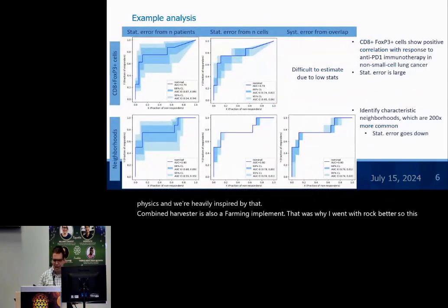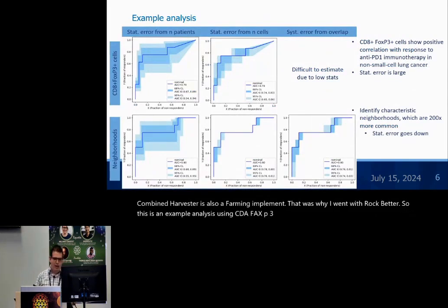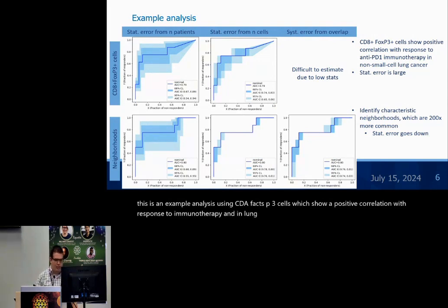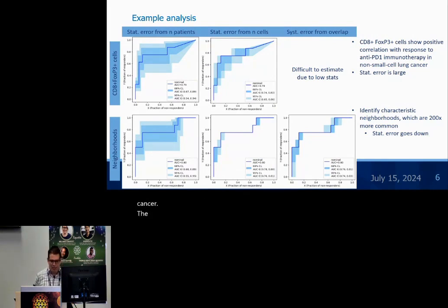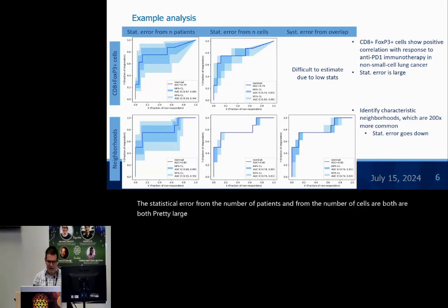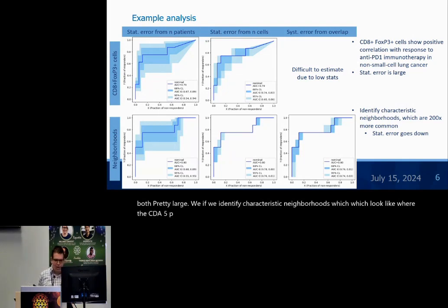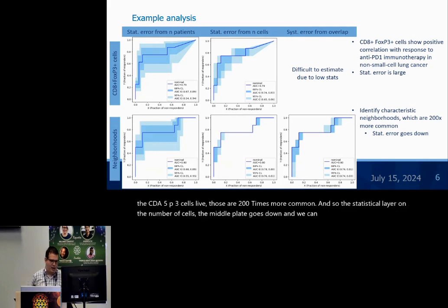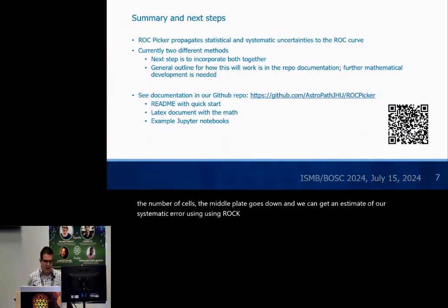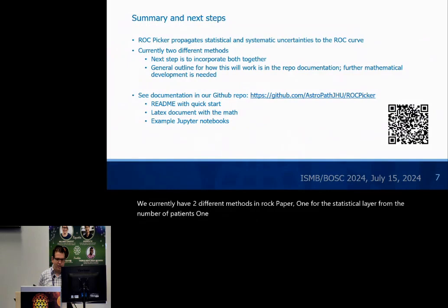Here is an example analysis using CD8-FATP3 cells, which show a positive correlation with response to immunotherapy in lung cancer, also in melanoma, but this one is lung cancer. The statistical error from the number of patients and from the number of cells are both pretty large. If we identify characteristic neighborhoods — which look like where the CD8-FATP3 cells live — those are 200 times more common, so the statistical error on the number of cells (the middle plot) goes down, and we can get an estimate of our systematic error using RackPicker. We currently have two methods in RackPicker: one for statistical error from the number of patients, and one for sample-wise uncertainties, and our next step is to incorporate both together mathematically.